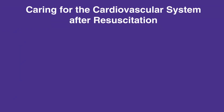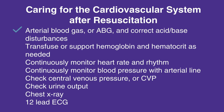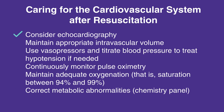When caring for the cardiovascular system after resuscitation, follow this checklist. Arterial blood gas, or ABG, and correct acid-base disturbances. Transfuse or support hemoglobin and hematocrit as needed. Continuously monitor heart rate and rhythm. Continuously monitor blood pressure with arterial line. Check central venous pressure, or CVP. Check urine output. Chest X-ray. 12-lead ECG. Consider echocardiography.